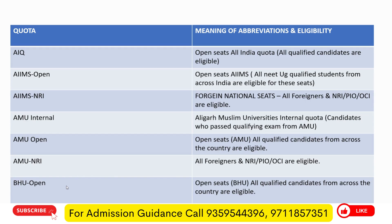Next is AIIMS NRI — these are called foreign national seats. It is not that foreign nationals have a different quota, NRI has a different quota, PIO quota is different, OCI quota is different — no. Foreign national seats means all the candidates who are foreigners, who are NRI, Person of Indian Origin, or Overseas Citizen of India are eligible for these seats.